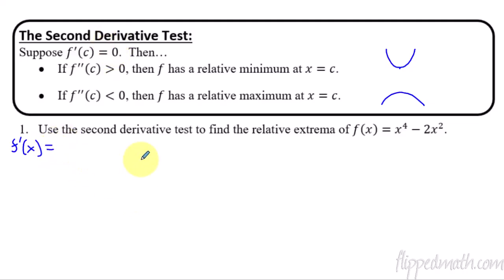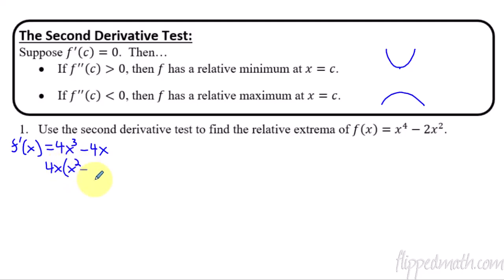The first derivative equals 4x³ minus 4x. Now when does this equal zero? I can factor this — factor out a 4x — and I'm left with x² minus 1, and that equals zero when 4x is zero, so x equals zero. Then solving x² minus 1 equals zero: add one, take the square root, and you get x equals plus or minus one.